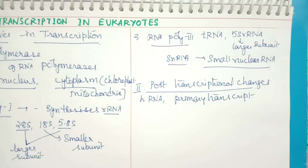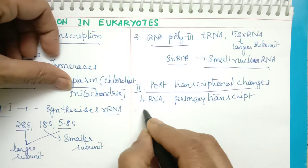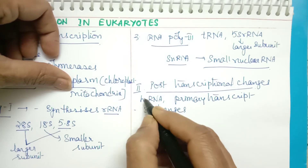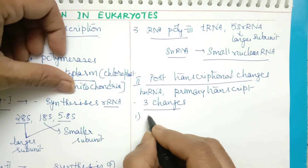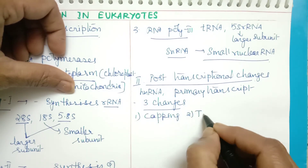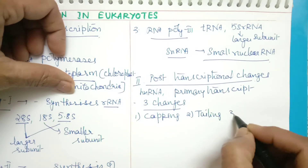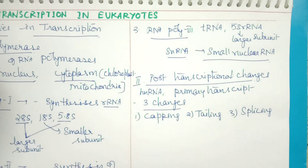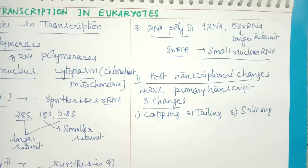hnRNA undergoes mainly three modifications: capping, tailing, and splicing. In this sequence, the hnRNA gets modified and is finally converted into mature mRNA. Let us see what happens in each of these three steps, starting with capping.